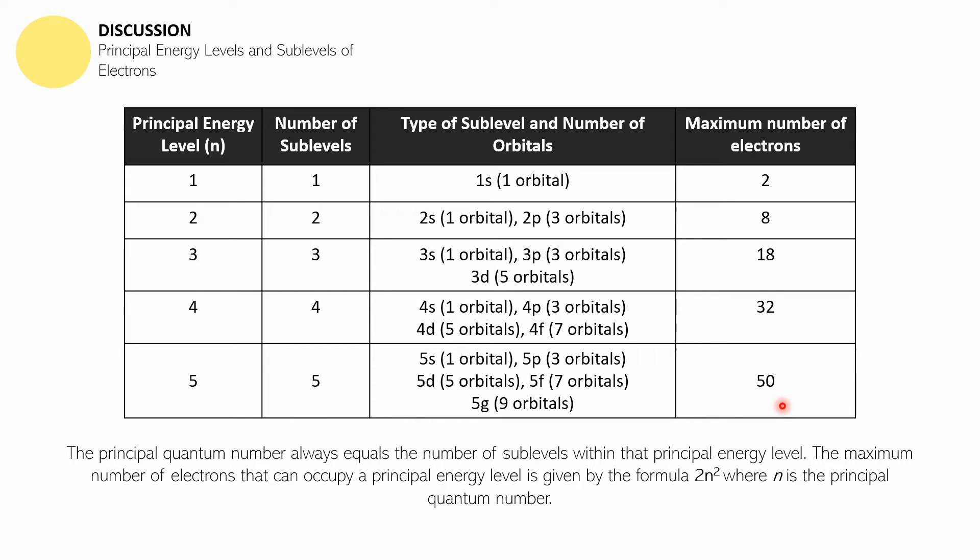The principal quantum number always equals the number of sublevels within that principal energy level, as is made obvious by this table. The maximum number of electrons that can occupy a principal energy level is given by the formula 2n², where n is the principal quantum number. Let's try that out. If n is equal to 4, so 2 times n squared—4 squared is 16 times 2, that's 32. So the maximum number of electrons you'll find in the fourth energy level will be 32.